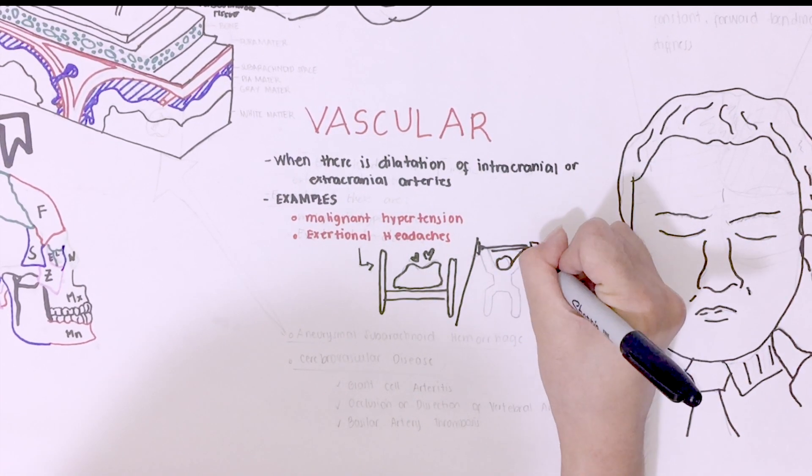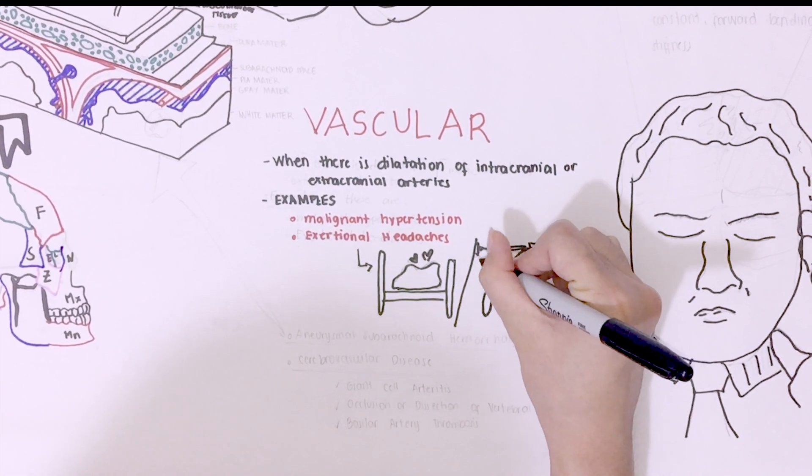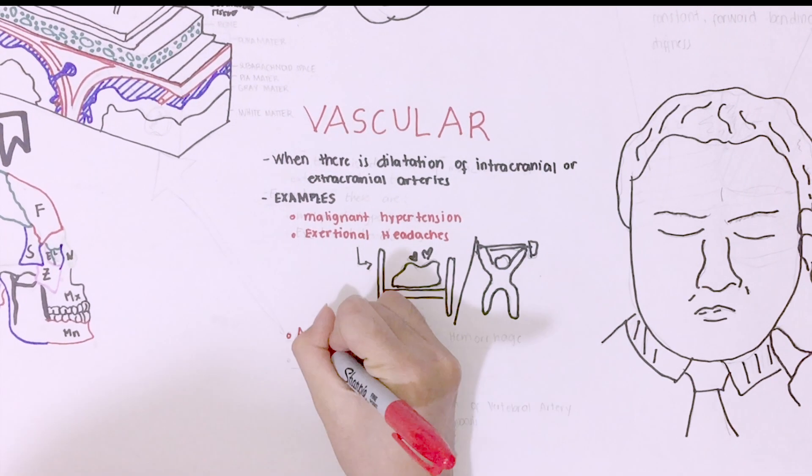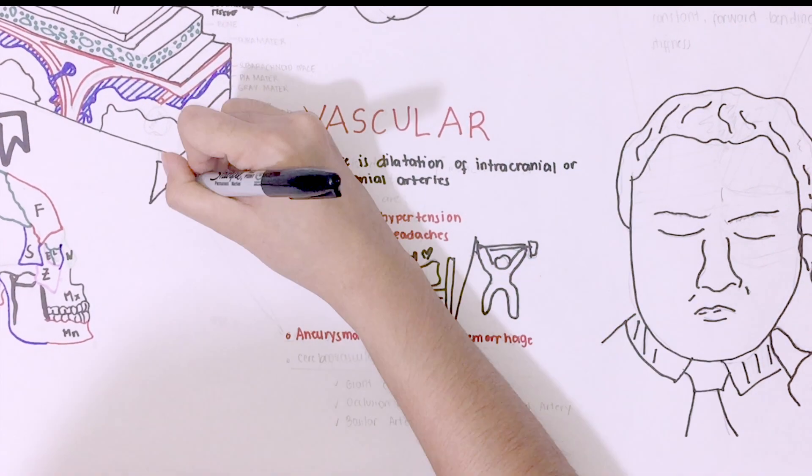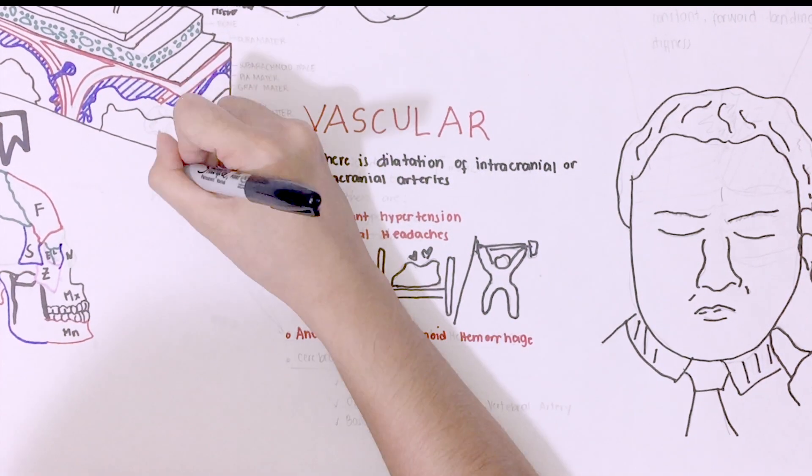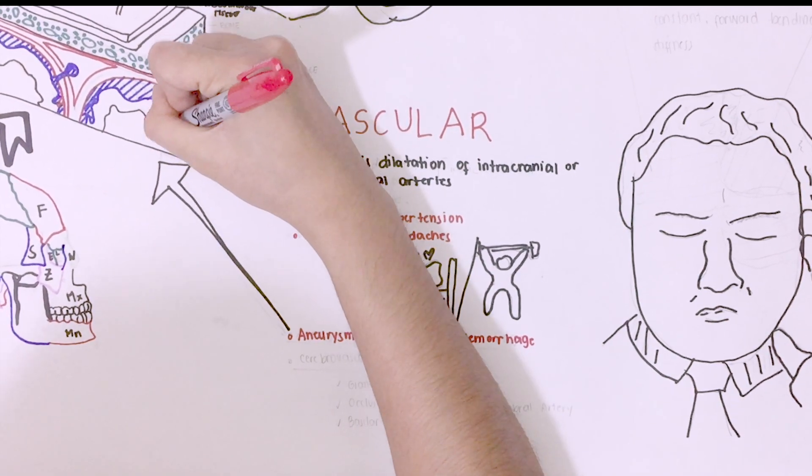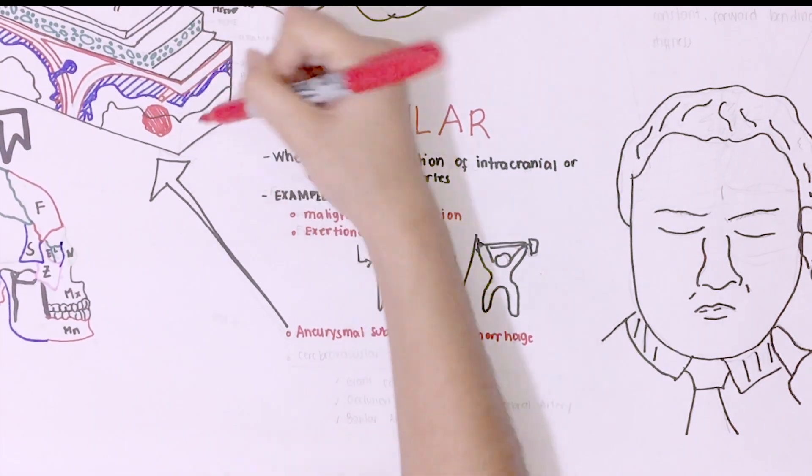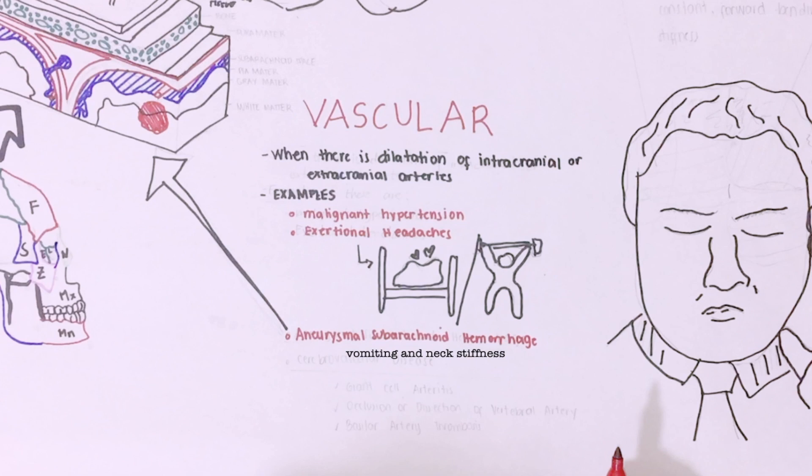These headaches are not that serious compared to other causes of vascular headache. Aneurysmal subarachnoid hemorrhage are very intense and sudden. It is associated with vomiting and neck stiffness. This is identical to thunderclap headache.